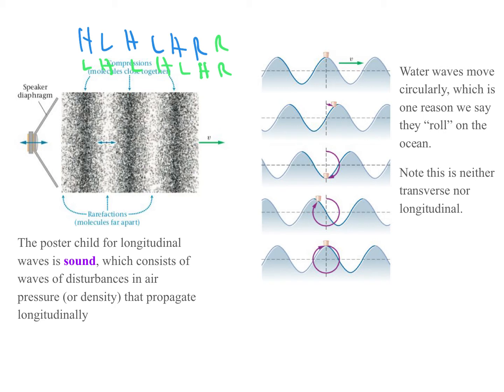Water waves are weird. They move circularly, which is one reason that we say that they roll on the ocean. If you were to watch a piece of cork in the ocean, it is carried forward but then goes down, and then it's carried back up and ends up more or less where it started. So instead of just bobbing up and down, it sort of does this rolling motion as the wave goes through. Notice that this is neither transverse nor longitudinal. Those are not exclusive dichotomies, they're just the two major ways of classifying waves.